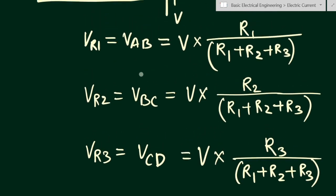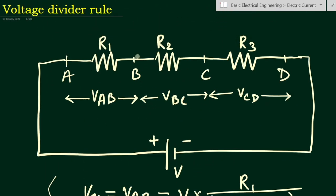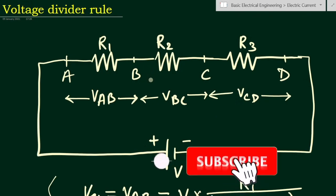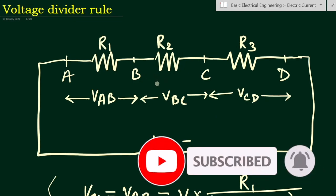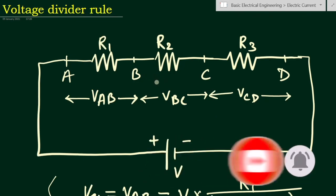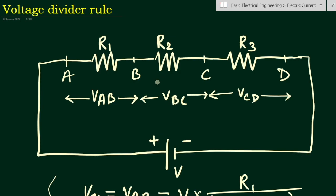So this is the voltage divider rule. Using this rule we can find out the voltage drops across any one of the resistances. In our later videos we will see what is the voltage divider circuit and how we can use them. If you have any questions, please put them in the comment section below. Also like, share, and subscribe to my channel. Thank you.